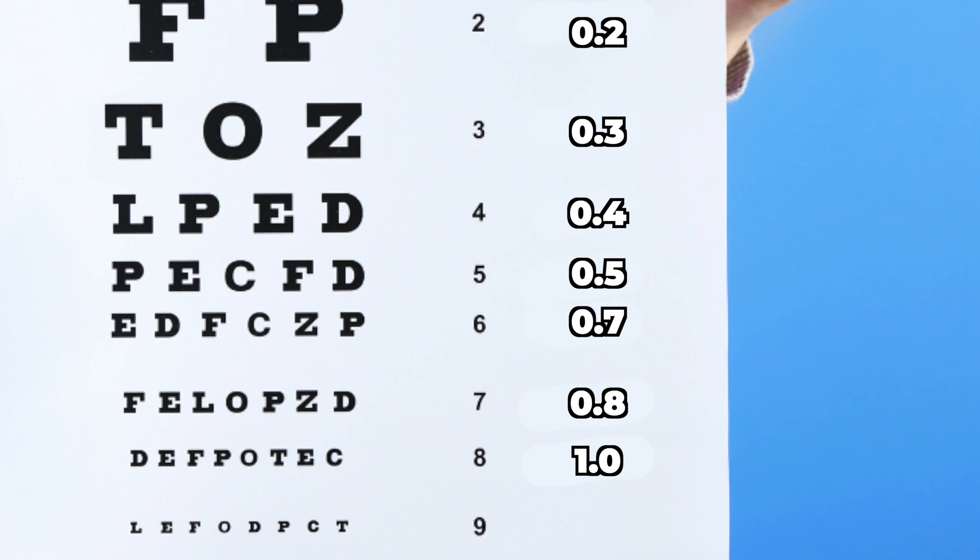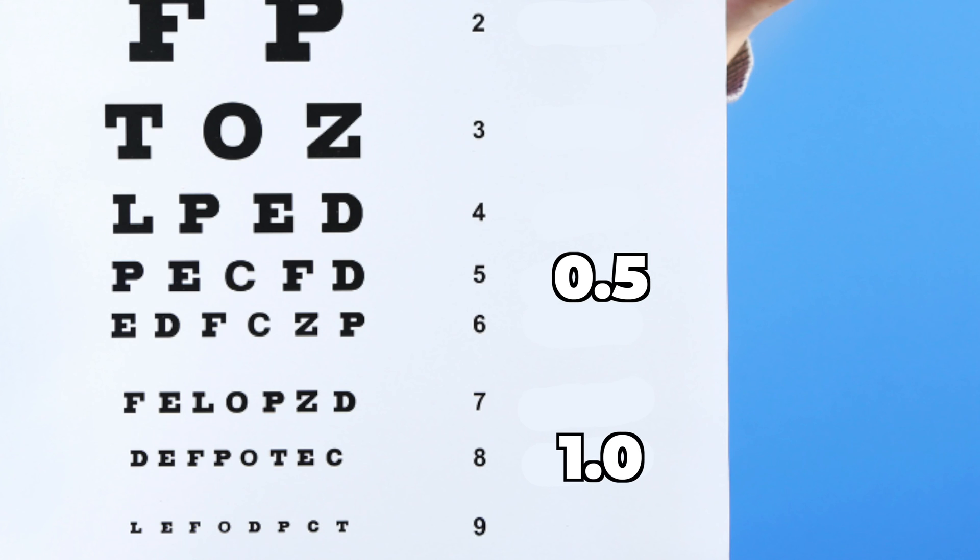In a decimal system however, it is much more intuitive and easier to understand. For example, if I have 0.5 vision compared to someone with 1.0 vision, I would know that this person can see letters that are about half the size of what I can see.